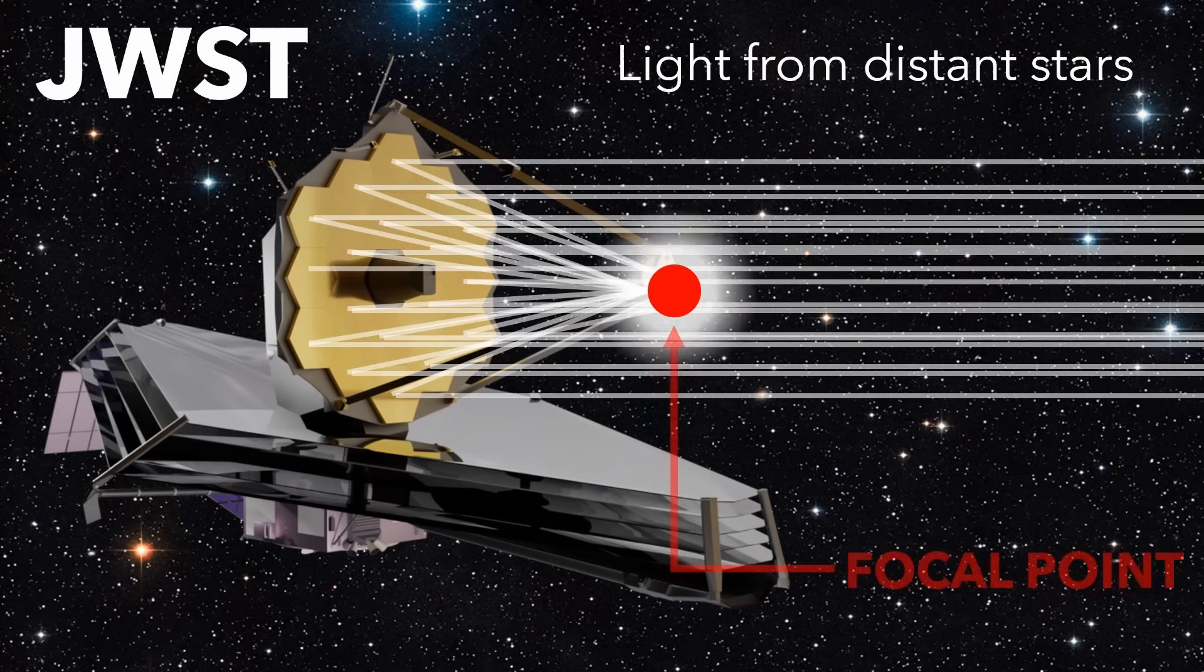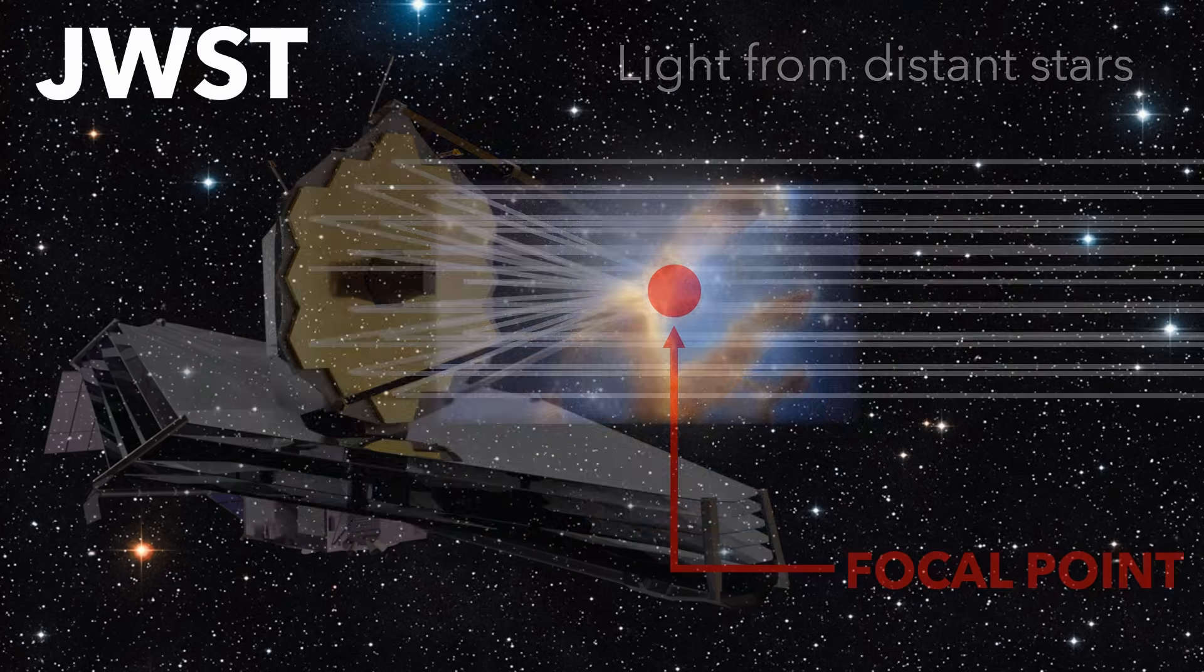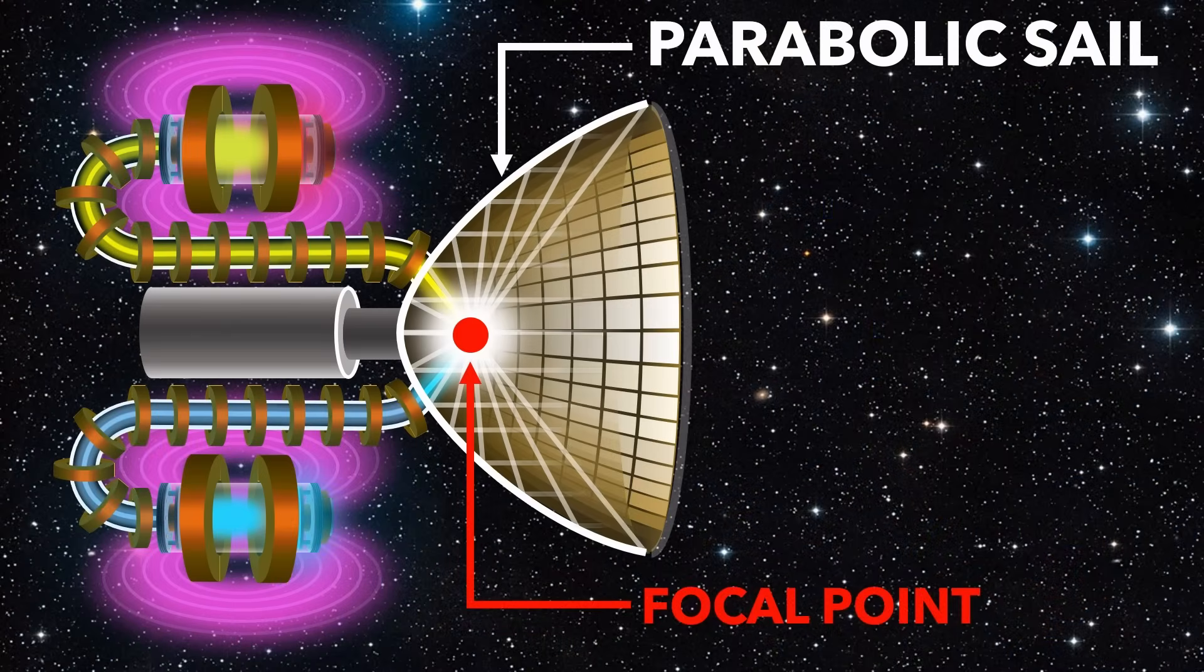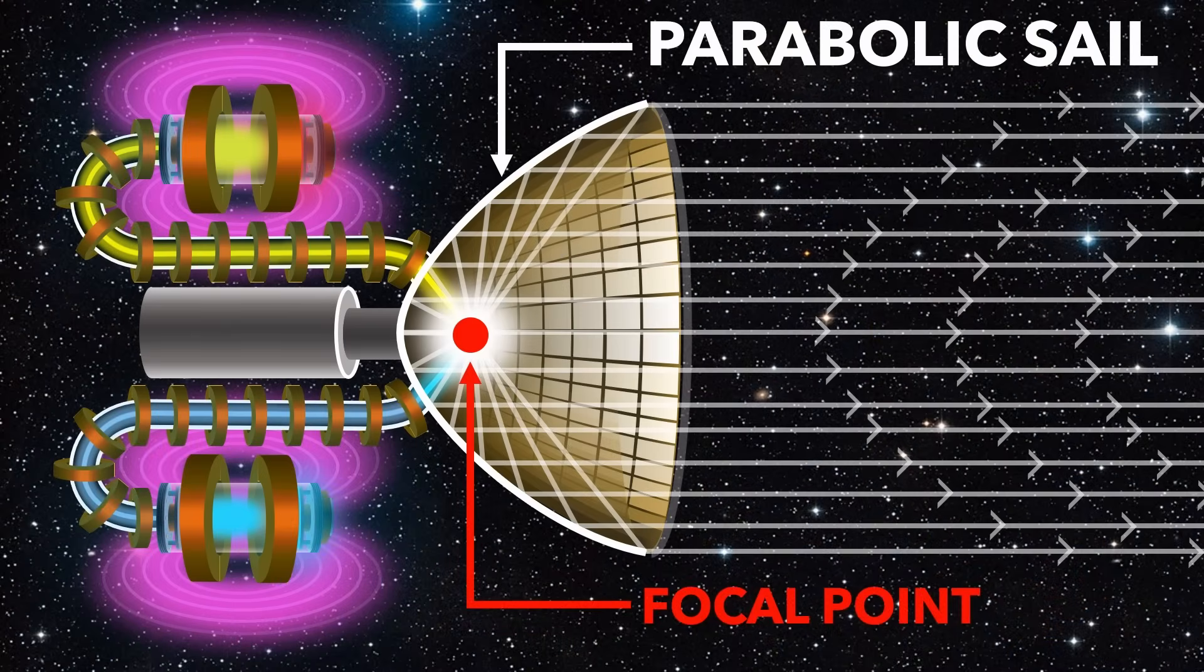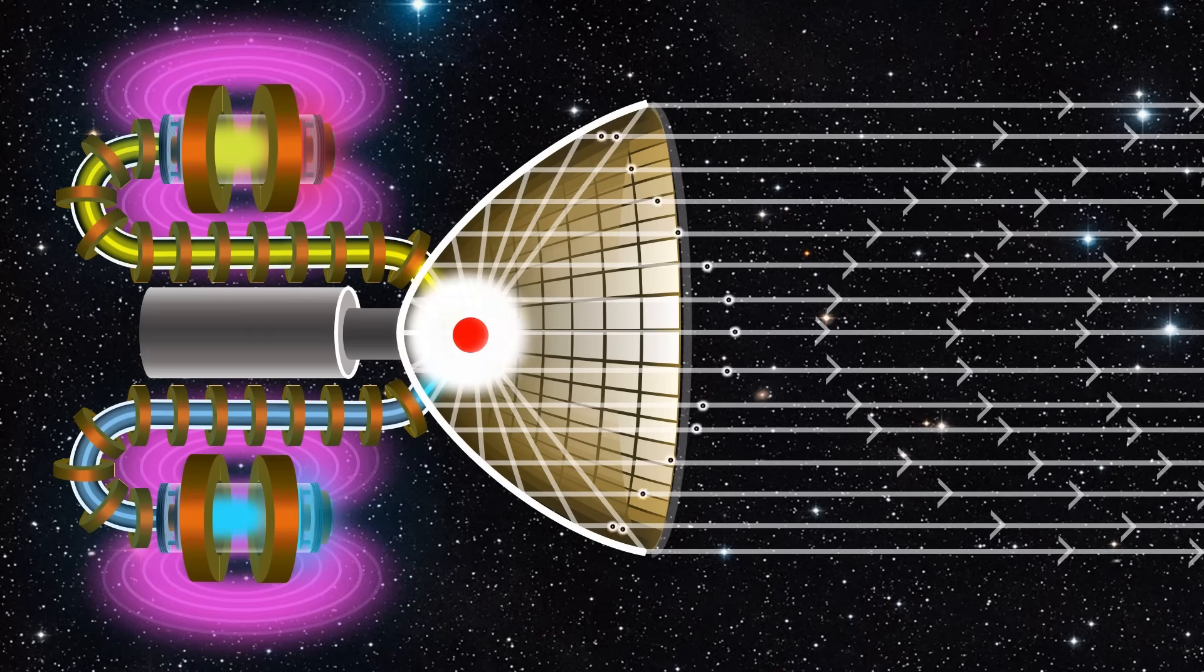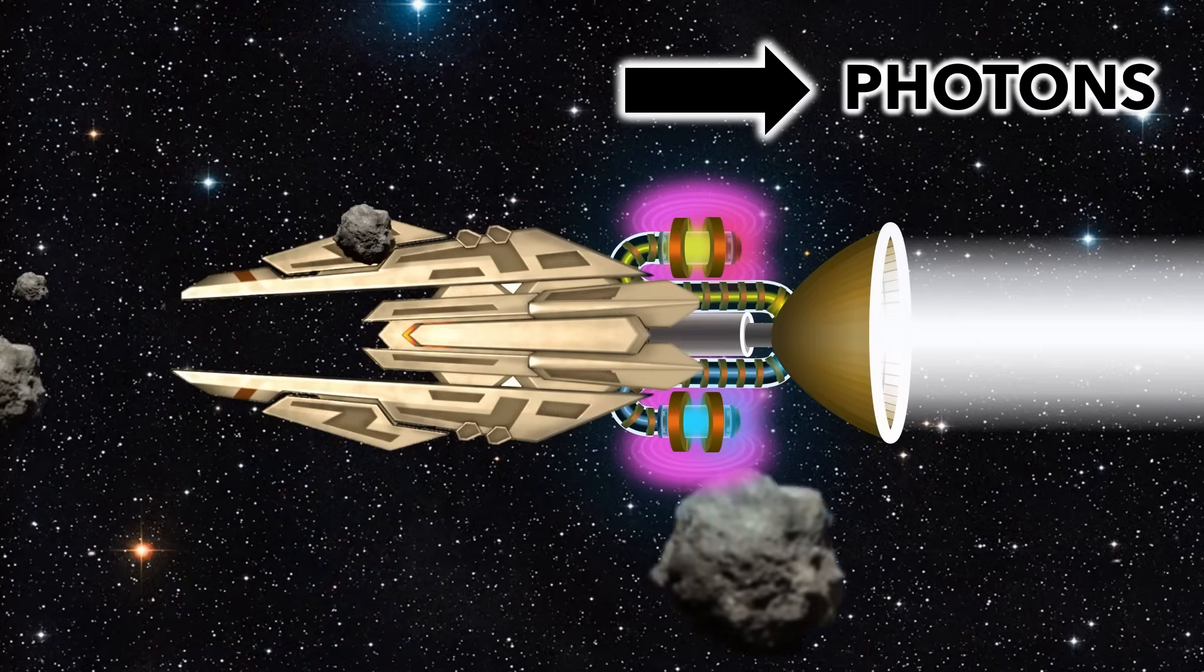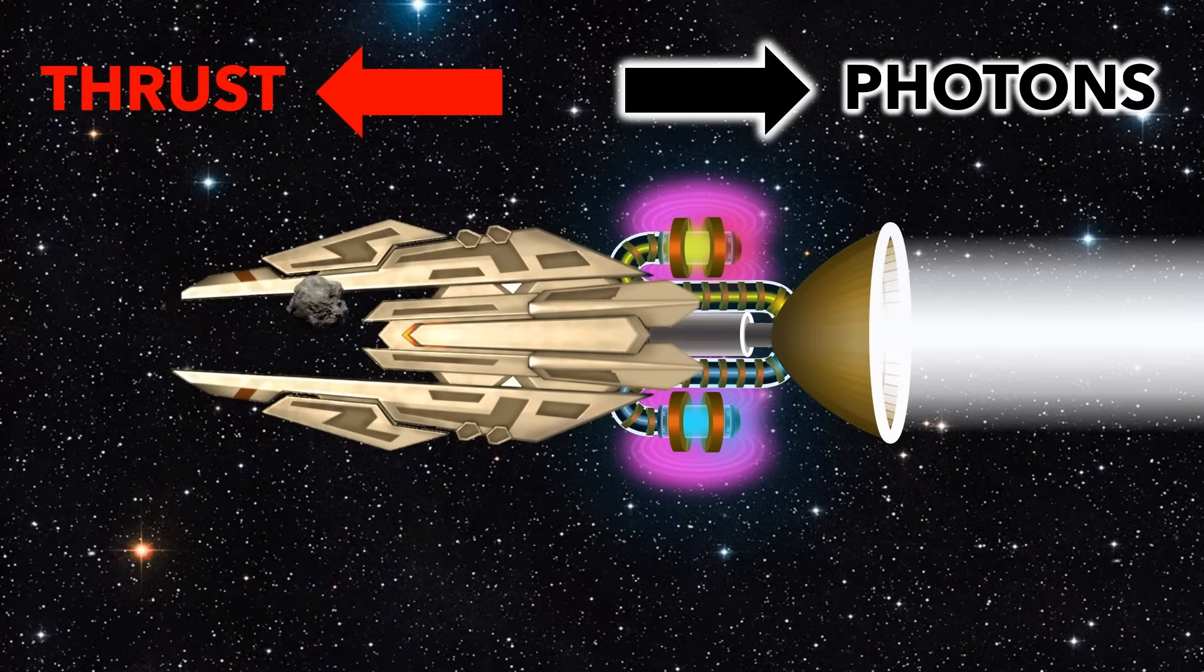Well, our parabolic photon sail works in reverse, redirecting all the gamma rays from a focal point into a perfectly horizontal beam. The pressure from those reflecting photons pushes the craft forward, much like a sail.